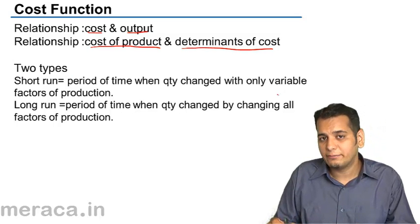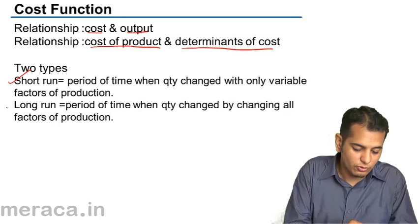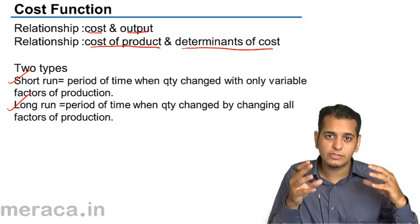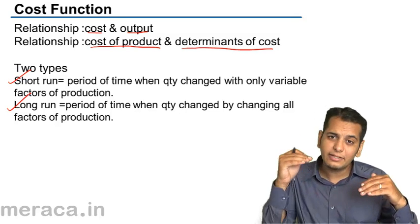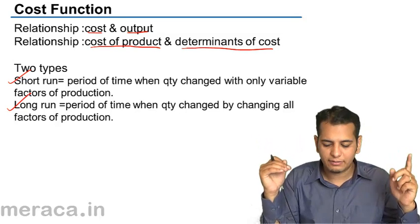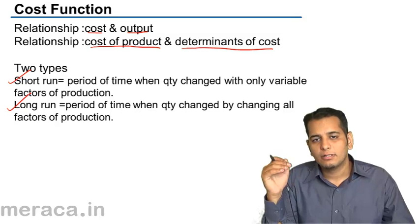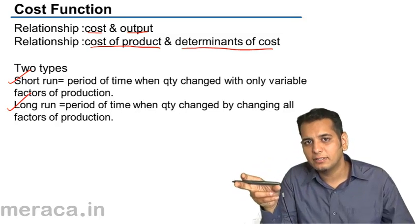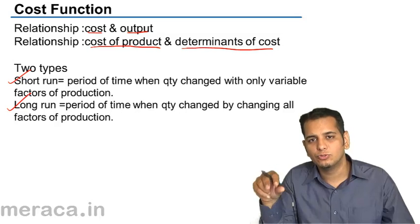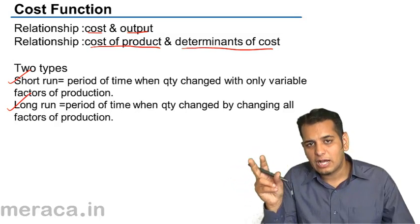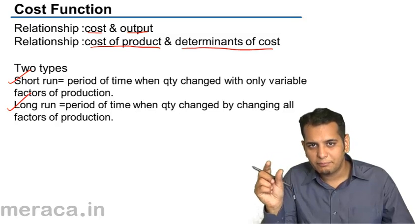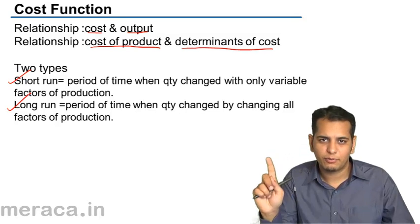Now let's understand the two types of cost: short-run cost and long-run cost. Short-run costs are those costs which are incurred by a firm in order to increase its output by varying only one factor of production. Because the short-run period is that period wherein only one factor of production is variable, short-run costs are the costs incurred for increasing output during that period.